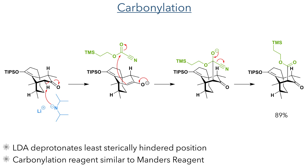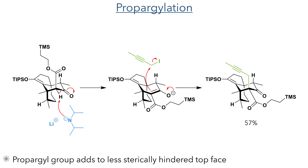Taking this compound forward, it was once again reacted with LDA, forming an enolate that then attacked a trimethylsilyl ethoxycyanoformate compound. This forms a tetrahedral intermediate that then eliminates cyanide to form the target ester — a reagent similar to Mander's reagent, which is used to install methyl esters. In the next reaction, the proton alpha to both the ketone and the ester was deprotonated and reacted with 1-iodobut-2-yne, forming a quaternary carbon centre in a 57% yield.